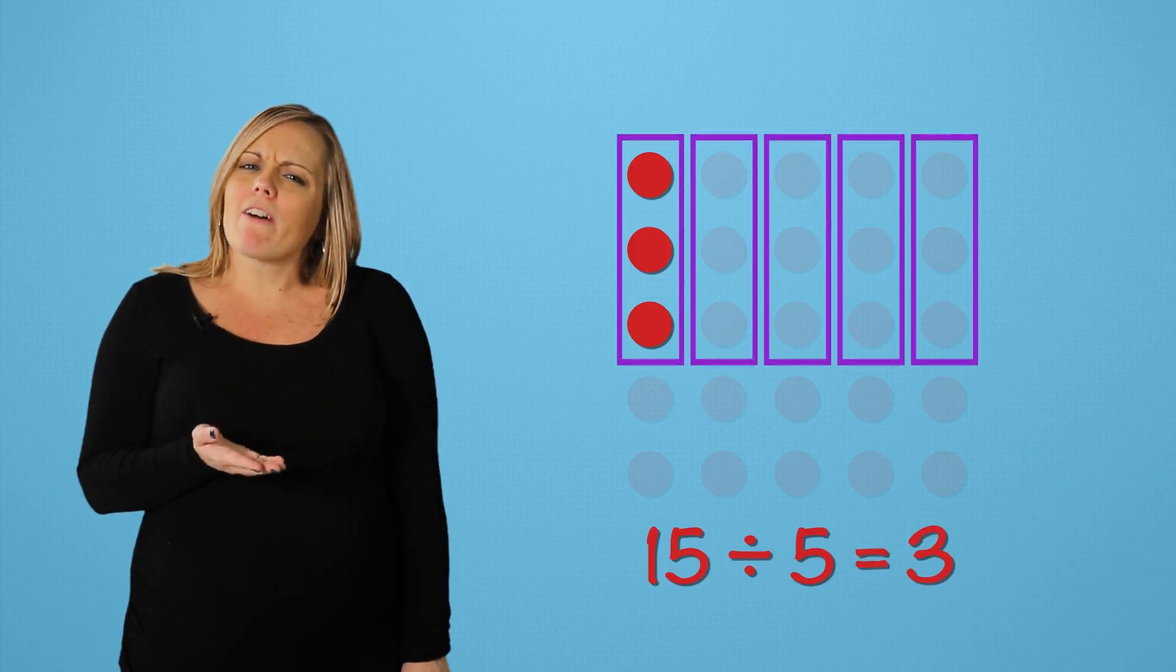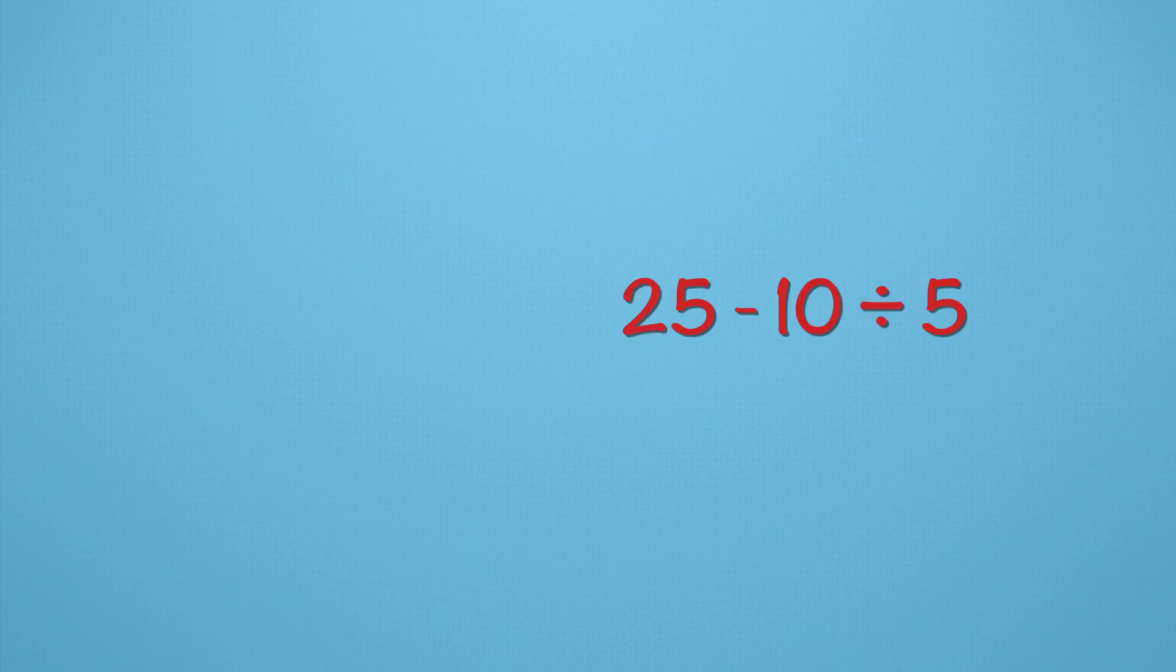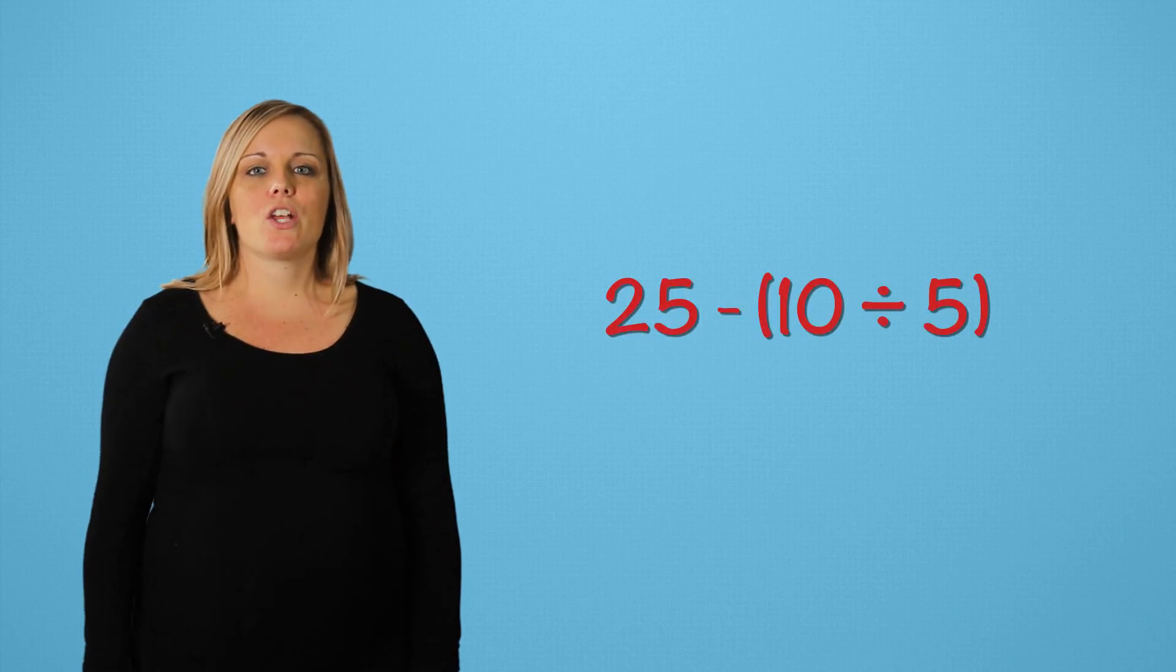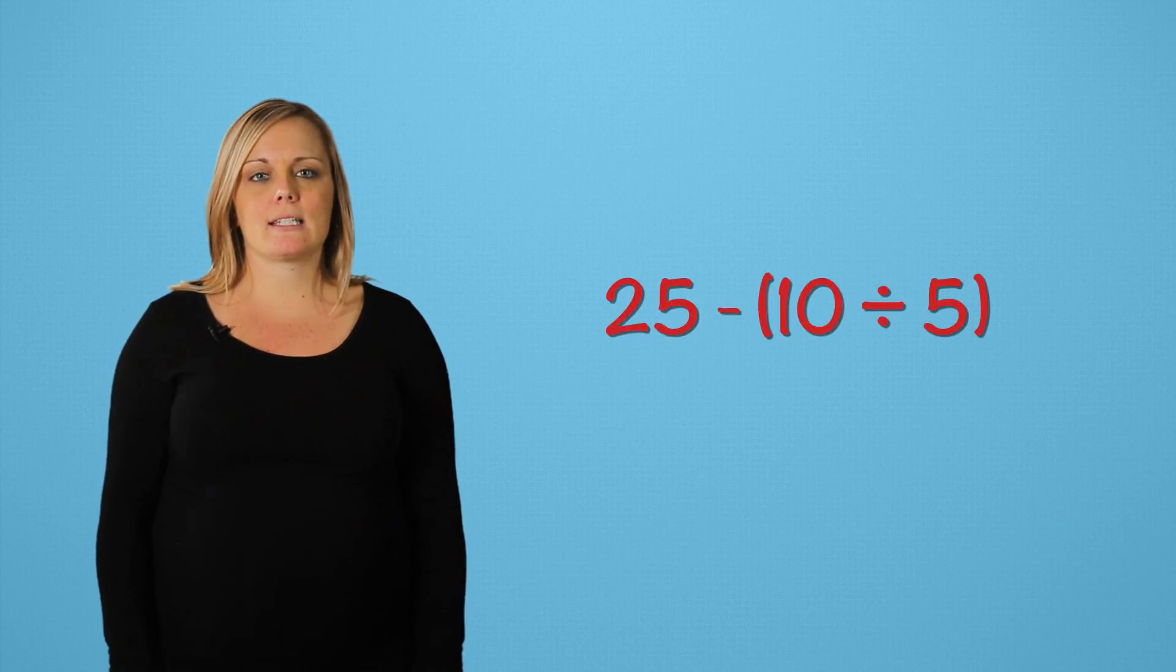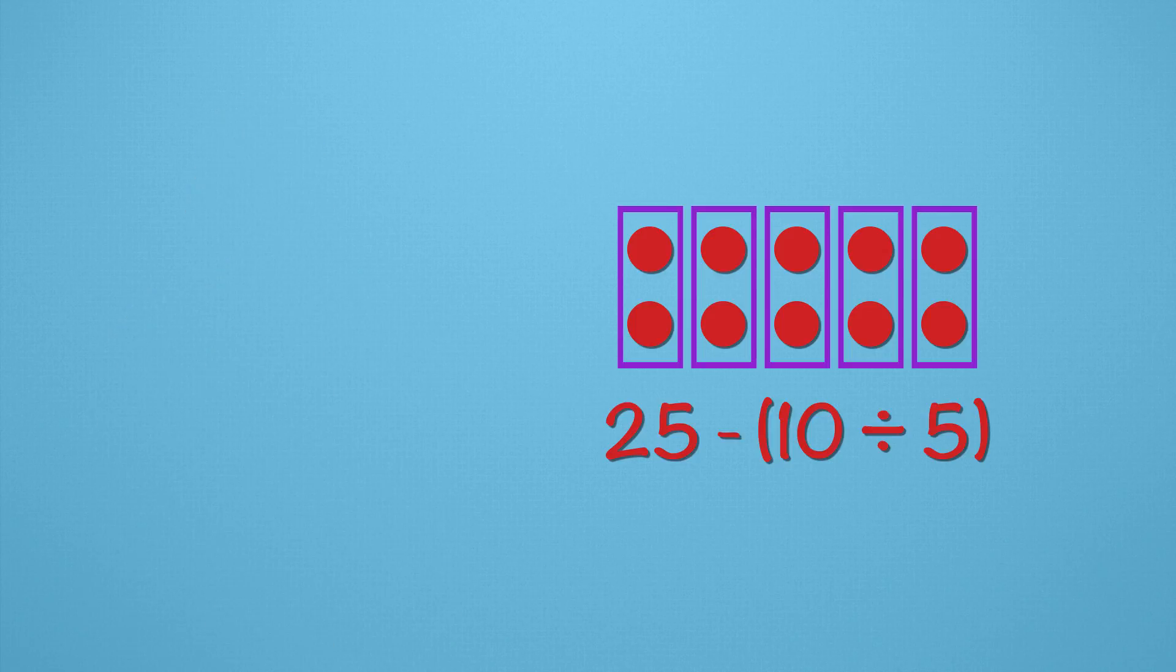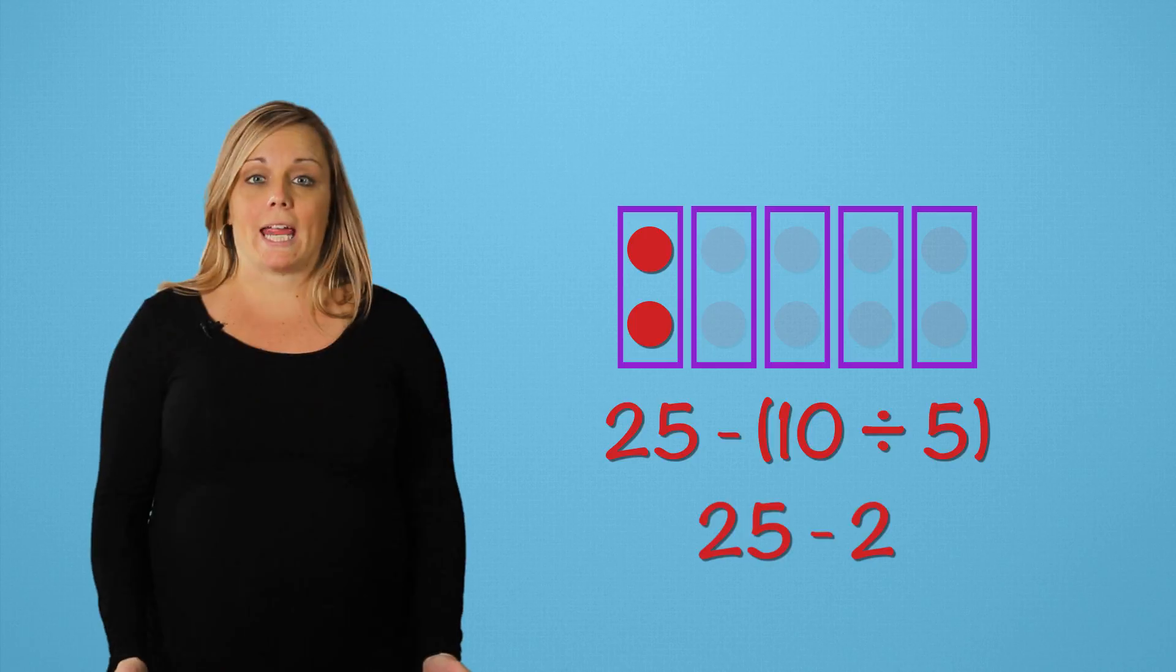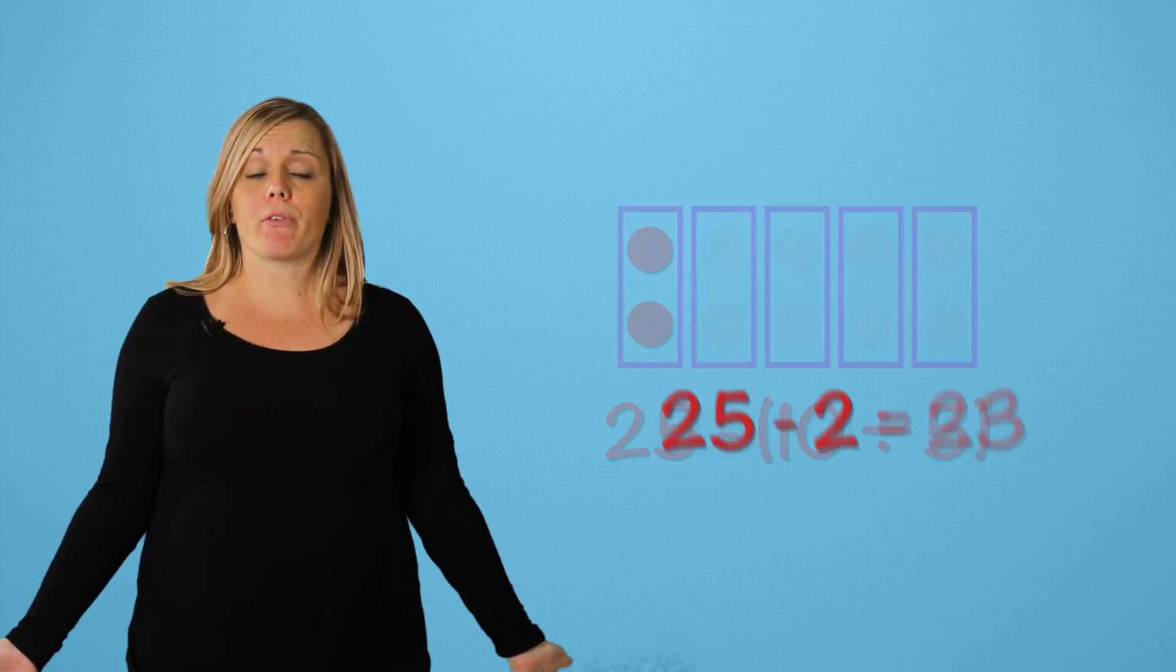But what if we want to divide first? What would that equation look like? You got it. So, let's start with the parentheses. 10 divided by 5 is... And 25 minus 2 is... Right. Our final answer is 23.